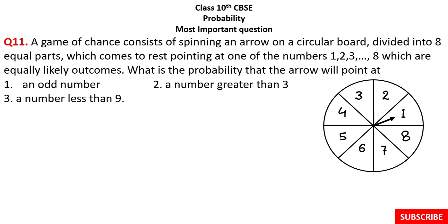Hello students, class 10th math probability. Our next most important question: a game of chance consists of spinning an arrow on a circular board divided into 8 equal parts, which comes to rest pointing at one of the numbers 1 to 8, which are equally likely outcomes. The circular board has 8 equal parts with numbers 1 to 8, all equally divided.